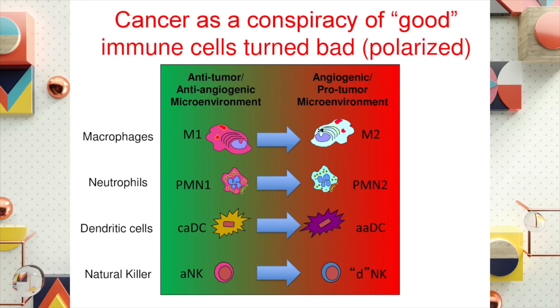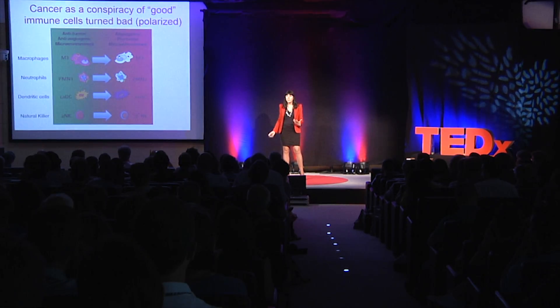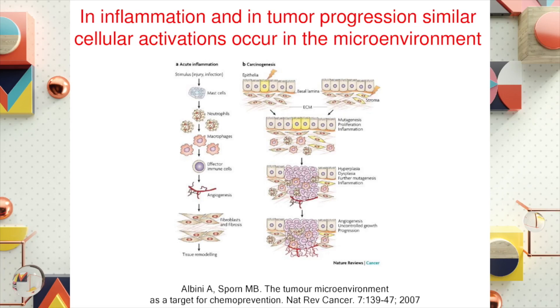Why does this happen? Because our good cells are somehow induced by the tumor cells to become bad cells and help the tumor. This is called immune cell polarization. We have macrophages M1, which are good, anti-angiogenic, anti-cancer, and there are macrophages M2 that somehow are able to help the tumor grow.